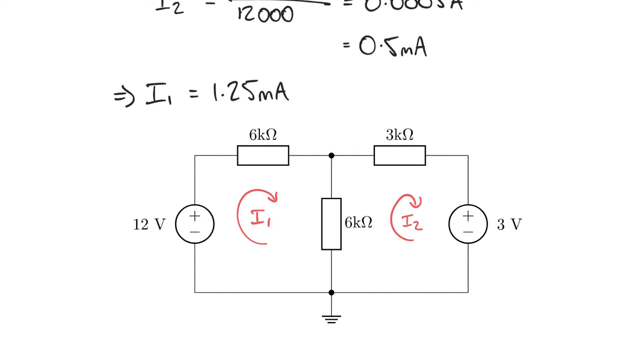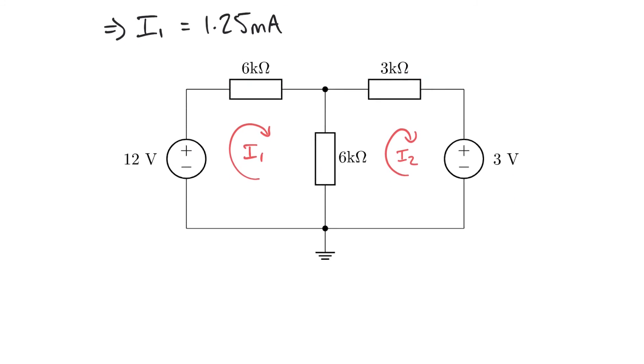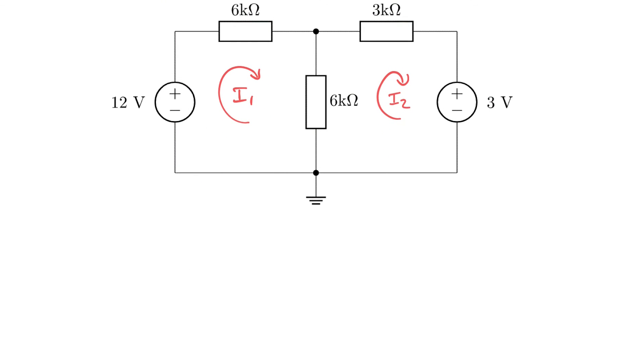And we've got a current of I2 being equal to 0.5 milliamps, flowing up. Again, looking at that convention in the right-hand pane, that clockwise current is going to be flowing up through the 6k resistor. And so the total current flowing through this middle resistor is going to be the difference. It's going to be I1 minus I2, because these currents are in opposing directions. And so the total current through that central resistor, we could write it like this. We'll call it IR. IR is equal to I1 minus I2, which is 1.25 minus 0.5. Remember, we're in milliamps here. And that's going to give us 0.75 milliamps.